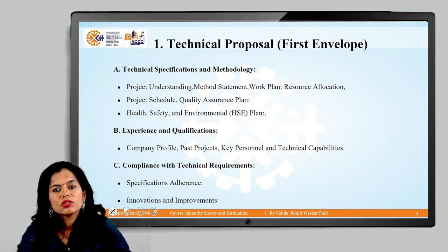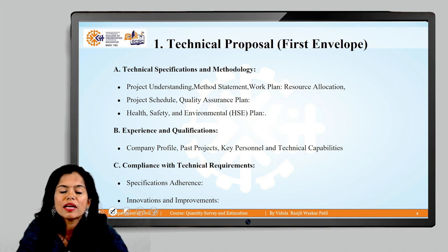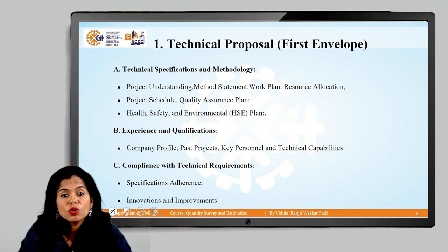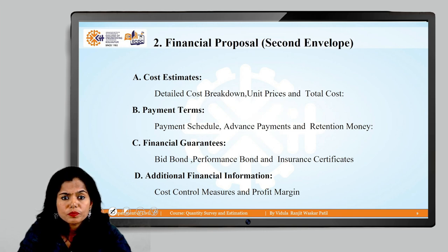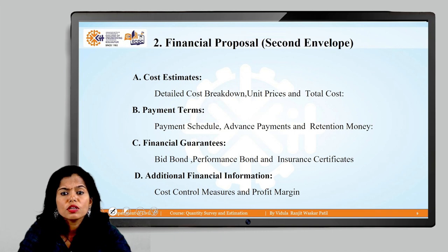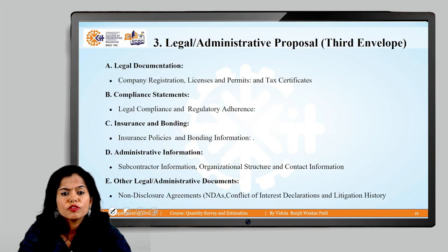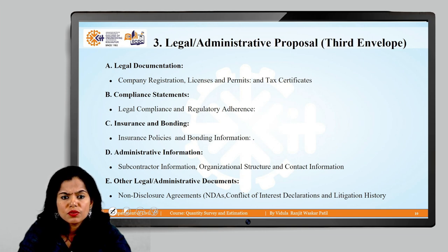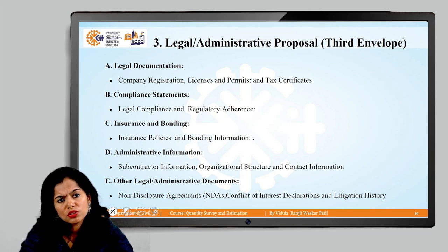In the two or three-stage tendering system, the first envelope is matched against qualification requirements before the second envelope is opened. The second envelope contains cost estimates, payment terms, financial guarantees such as bid bond, performance bond, insurance certificates, and profit margins. The third envelope contains legal documents, tax certificates, insurance, bonding, and administrative information that cannot be disclosed initially.